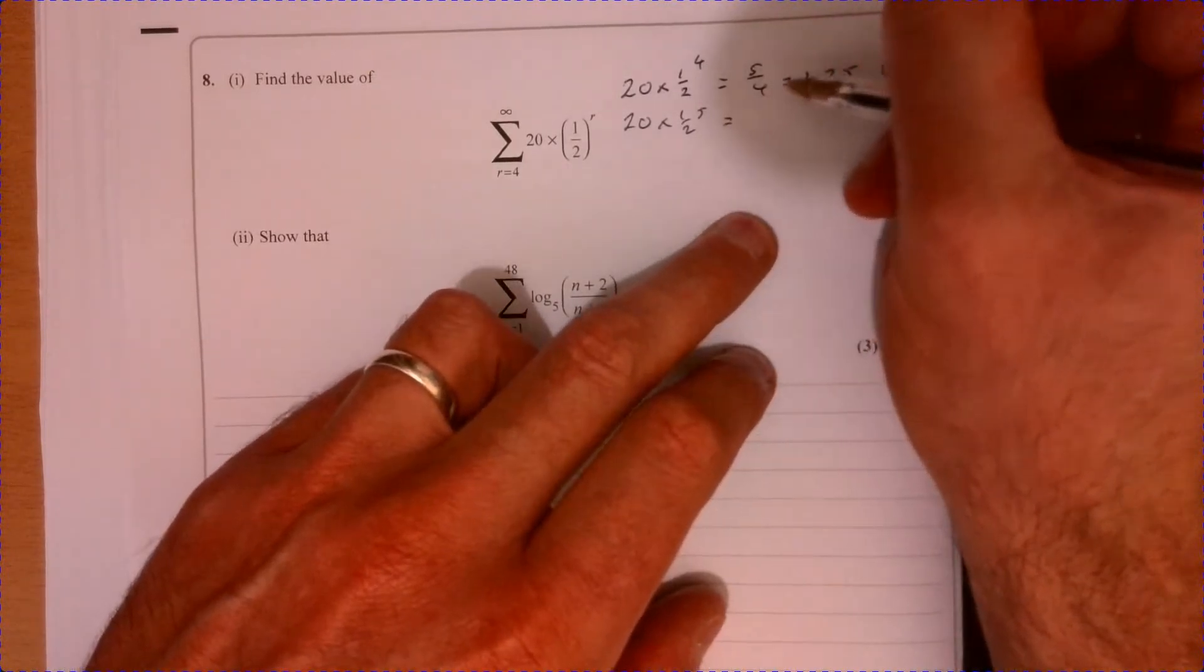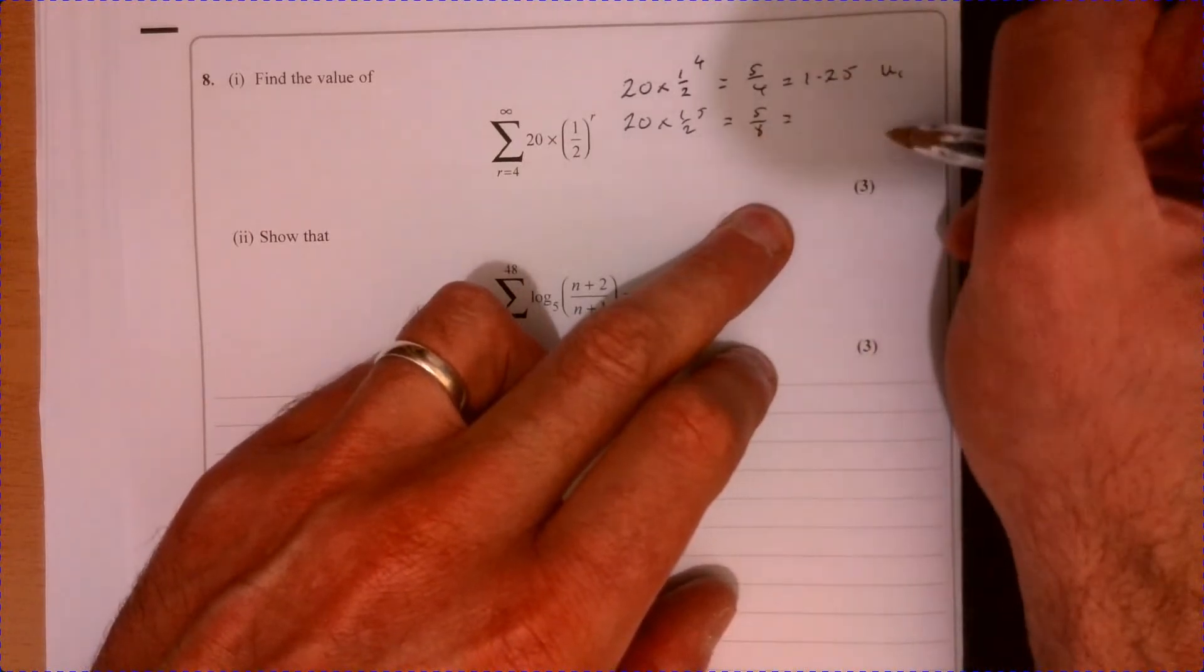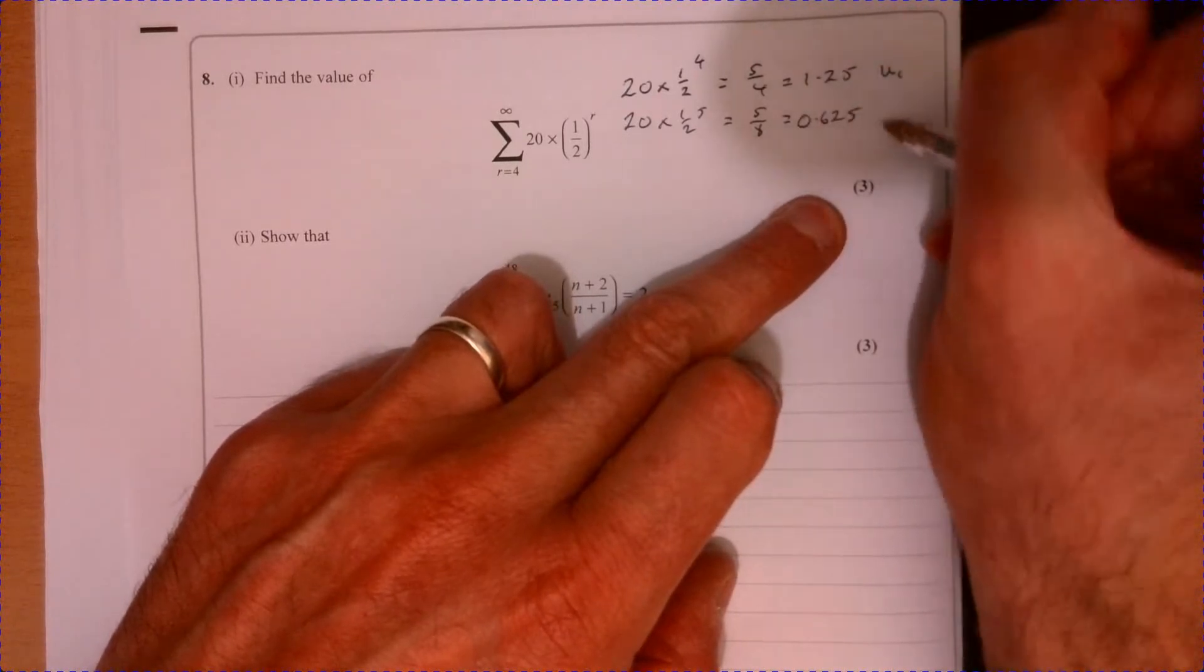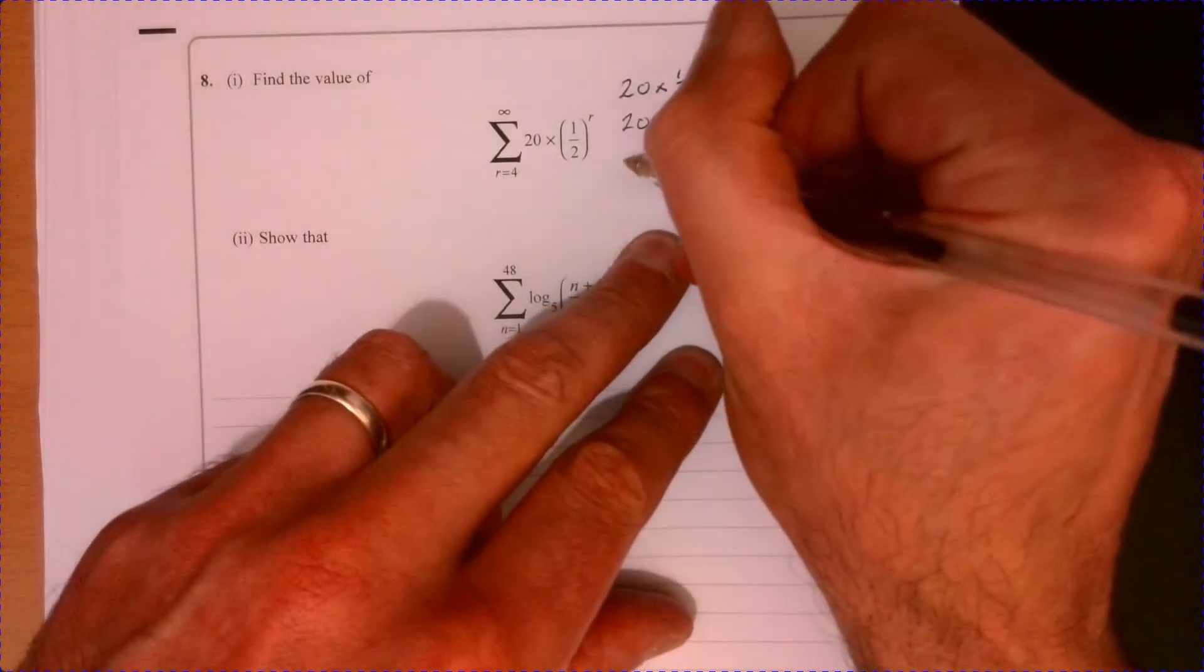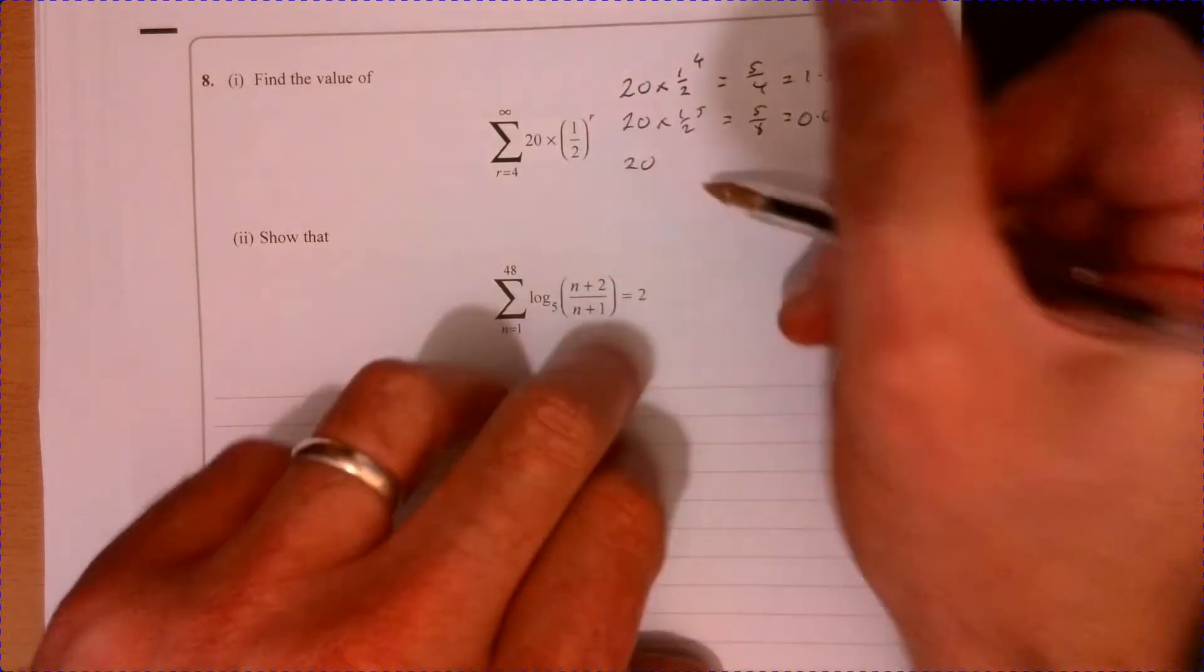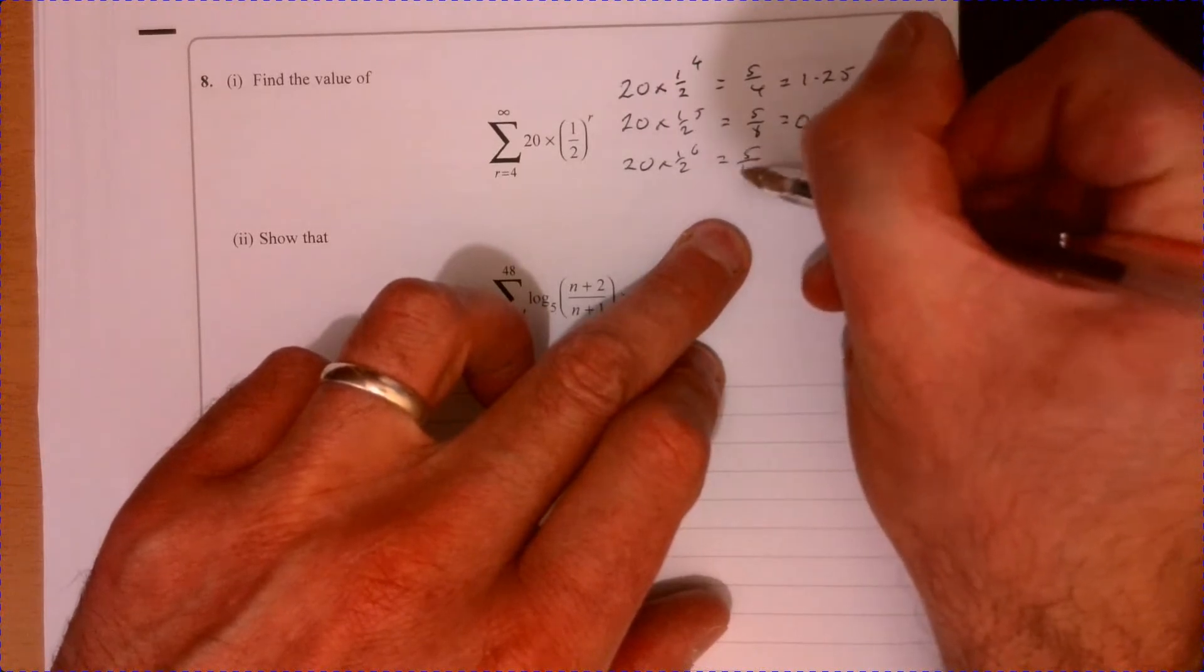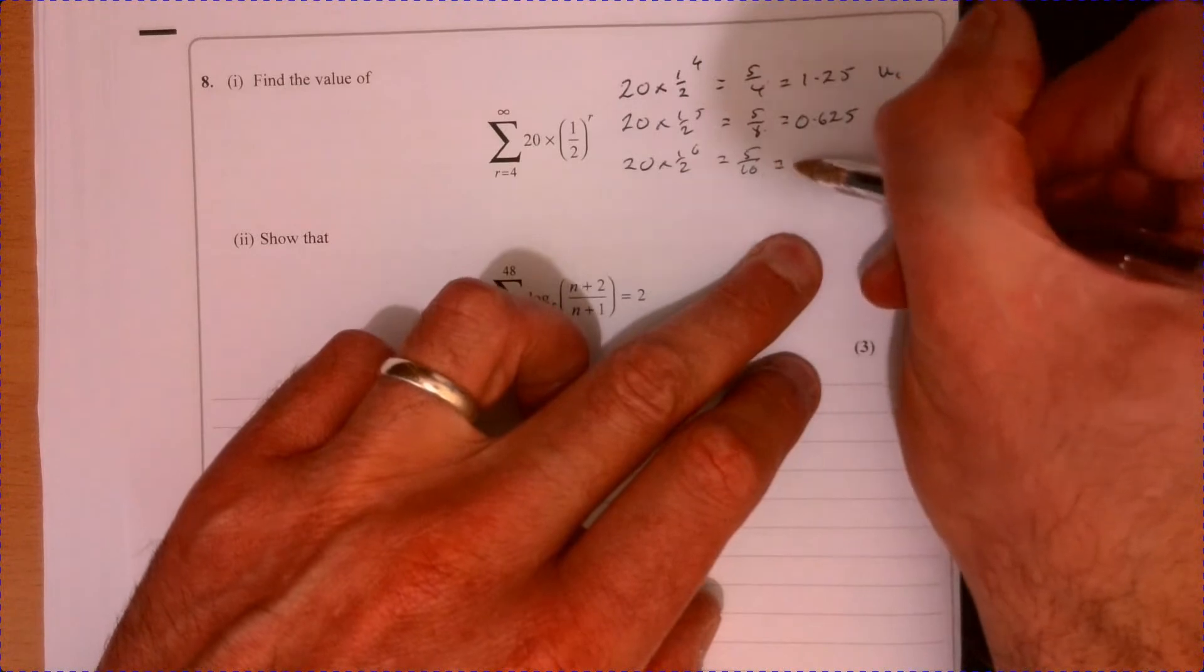After you've done a couple you'll get a feeling that it's just being multiplied by half each time, because that power's going up by one each time. So half to the six, that's going to be 5/16. You can see it's been halved each time, so this one here is 3.125.